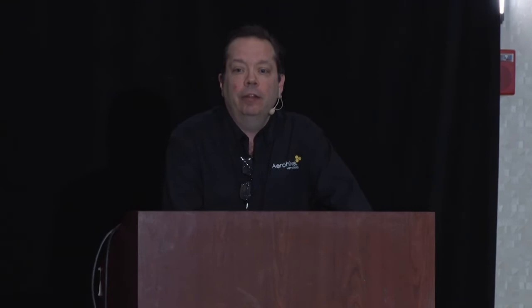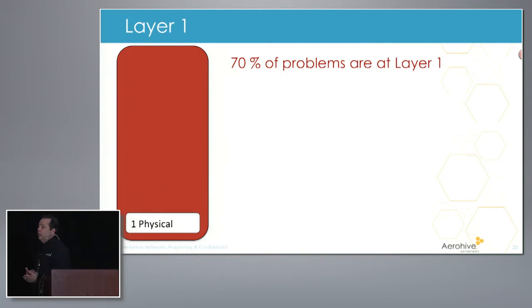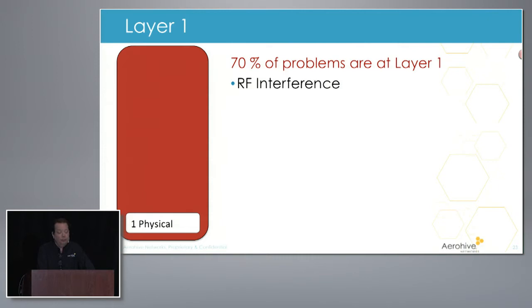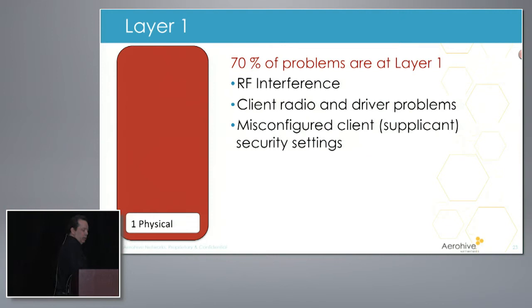The last tenet: your Wi-Fi sucks — that's what you're going to hear because it always gets blamed whether it's causing the problem or not. Going back to the OSI model, start at layer one. Upward of 70% of problems occur at layer one, whether they're ethernet or wireless problems. RF interference can obviously be a problem, so spectrum analysis is important. Try to eliminate the sources of interference. Also the client and driver problems we mentioned, misconfigured security supplicants, and POE problems with your access points.